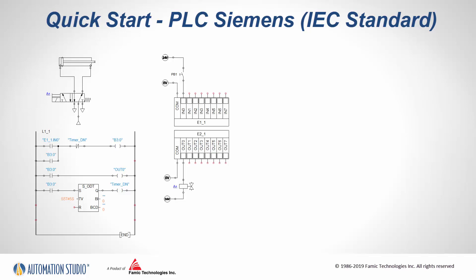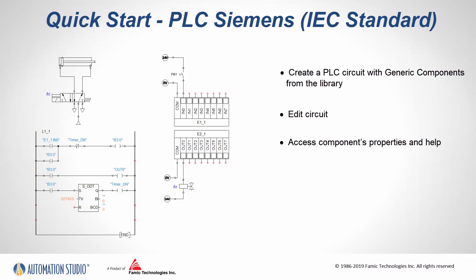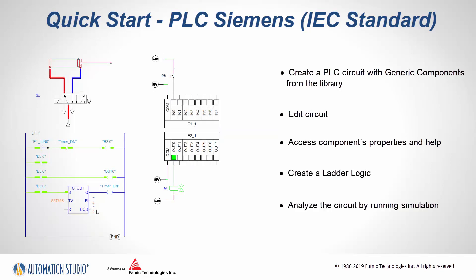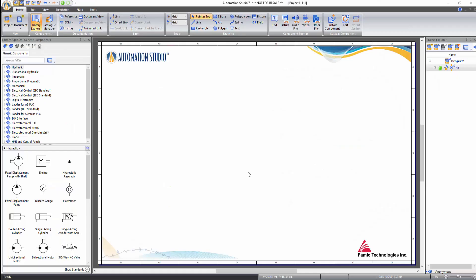This training video outlines the steps to create your first PLC Siemens circuit in Automation Studio using IC standards for electrical control. The user will learn how to create a PLC circuit with generic components from the library, how to do circuit addition, how to assess component properties and help, how to create a ladder logic, and how to run the simulation and analyze the circuit. We will create a circuit where a pneumatic cylinder will be controlled by PLC. All components needed for this first circuit are contained in the main pneumatic library.